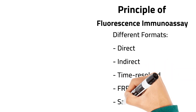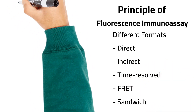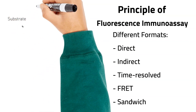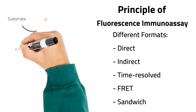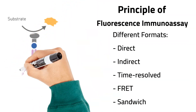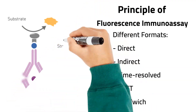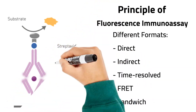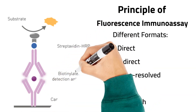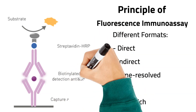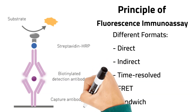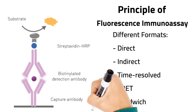The sandwich method is a widely used format which involves the capture of the target molecule by a specific antibody immobilized on a solid surface. A detector antibody labeled with a fluorescent molecule then recognizes a different epitope on the captured target molecule, thereby forming a sandwich complex. Upon excitation of the fluorescent probe, it releases energy in the form of fluorescent emission, which is then measured. The intensity of the fluorescent signal is proportional to the concentration of the target analyte in the sample.